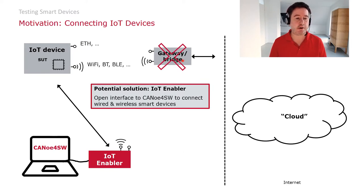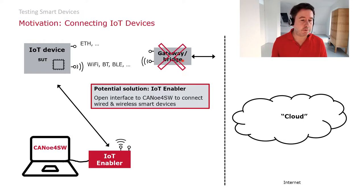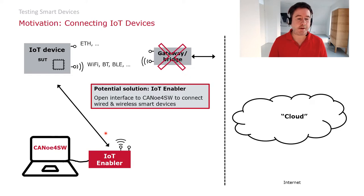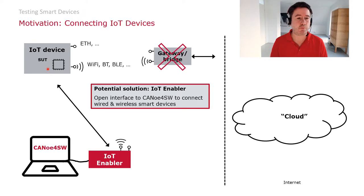The basic idea behind the IoT Enabler is to provide an open interface for Canoo for software to connect to wireless and wired smart devices. Canoo for software is connected to the IoT Enabler, and the IoT Enabler has support for different wireless and wired protocols. You can locally access your system under test using those interfaces. Basically, the IoT Enabler is complementary to the connectivity cloud solution — it provides the capability to test a smart device without using the cloud.